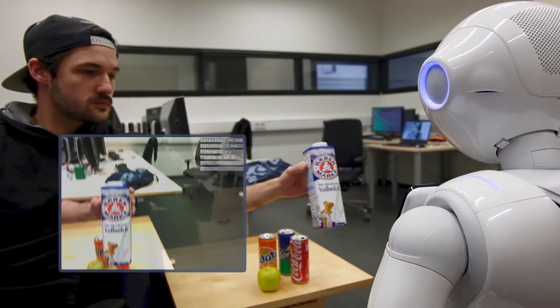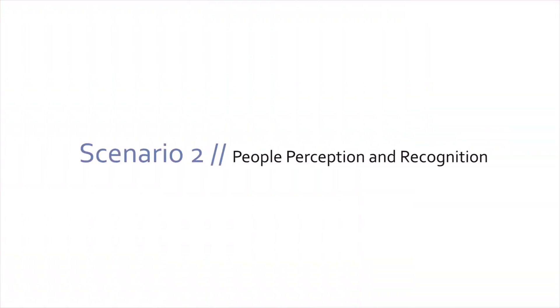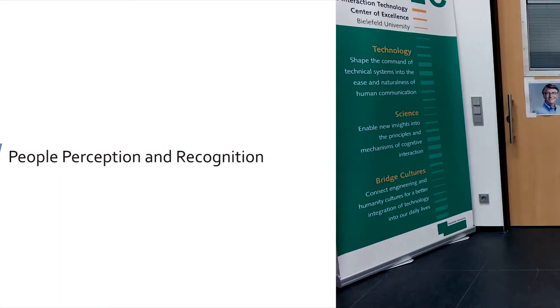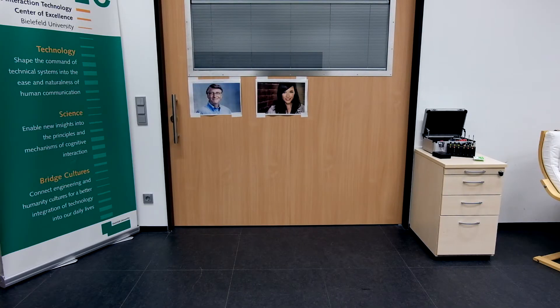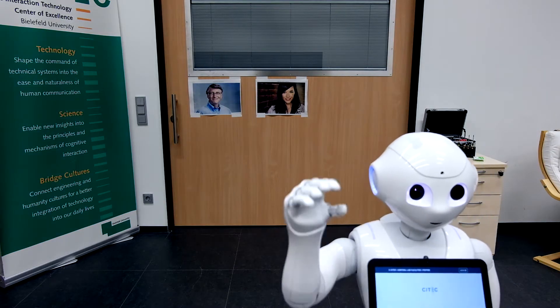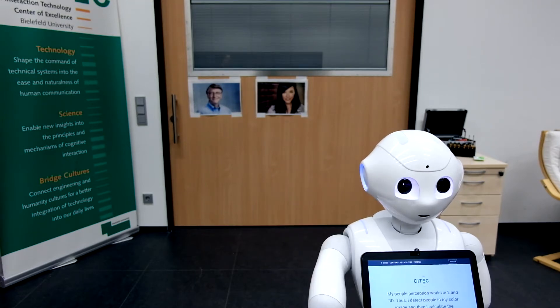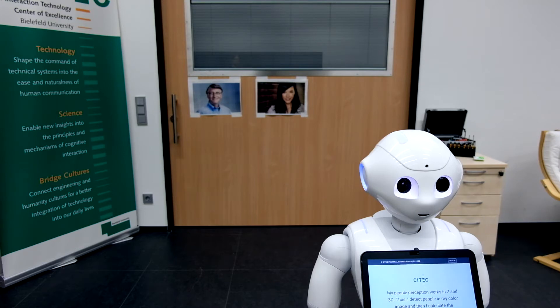Now I am going to show you my people perception and recognition skills. People perception works in 2D and 3D. Thus, I detect people in my color image and then I calculate the corresponding 3D position. Let's see how this works.